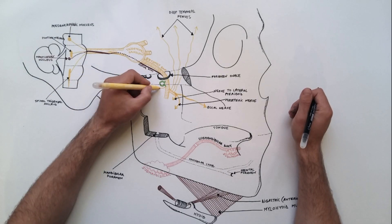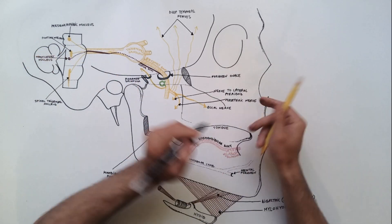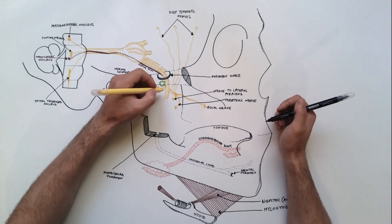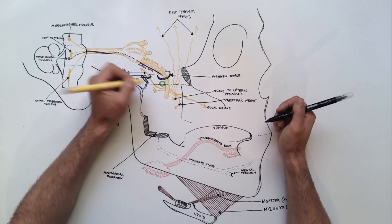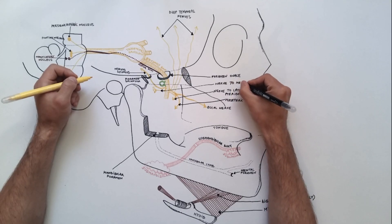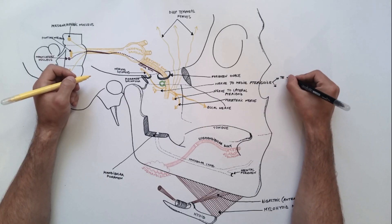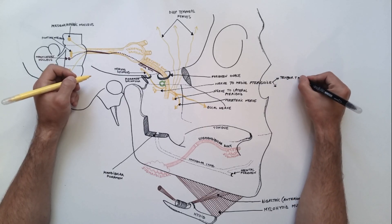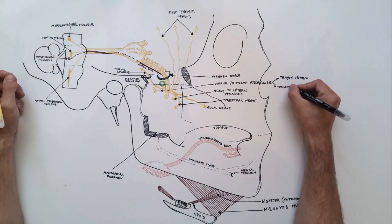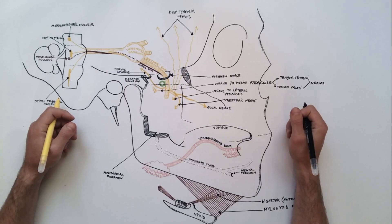Before discussing the branches from the posterior division of the mandibular nerve, we will note the branches from the main trunk of the mandibular nerve. Two branches arise from the main trunk. A sensory branch, which is the nervus spinosus, takes a recurrent course to enter the cranial cavity through foramen spinosum together with the meningeal artery, and supplies the dura mater of the middle cranial fossa. The nerve to medial pterygoid is the other branch from the main trunk and is a motor branch. It is closely related to the otic ganglion, traverses through the ganglion, and supplies the medial pterygoid from its deep aspect. In addition to medial pterygoid, it also supplies tensor palati and tensor tympani muscles.